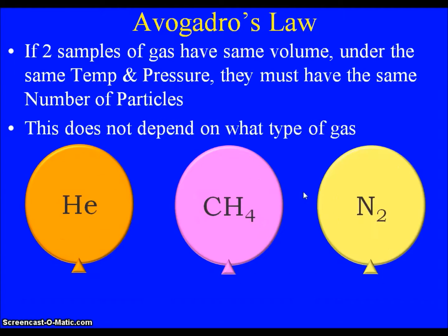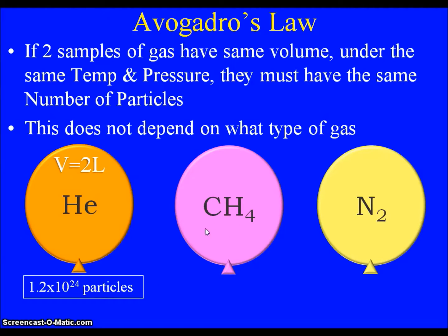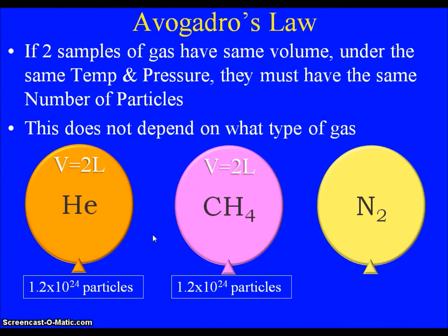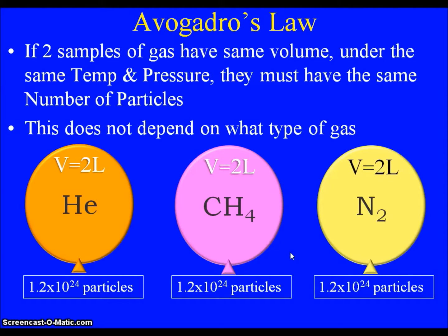Another interesting thing is that it does not depend on what type of gas you have. If I have helium with 1.2 times 10 to the 24th atoms in a balloon with a volume of 2 liters, and if I had some methane with the same number of particles, it would also have a volume of 2 liters. The same goes for nitrogen. No matter what type of gas you have, if you have the same number of particles, your volume has to be the same. It does not matter at all what type of gas is present.